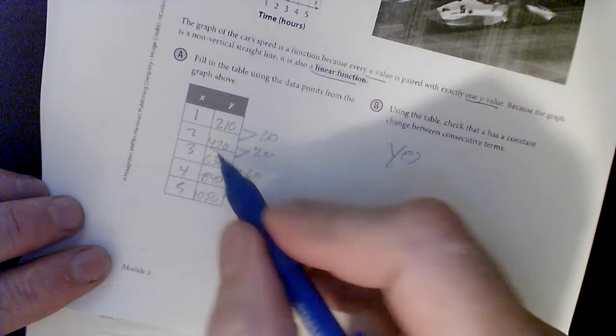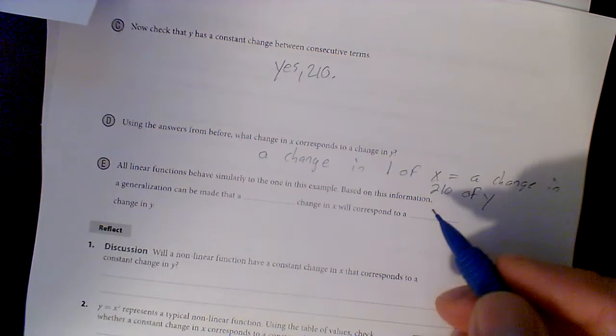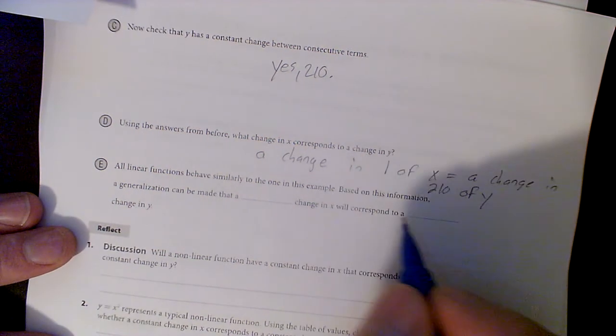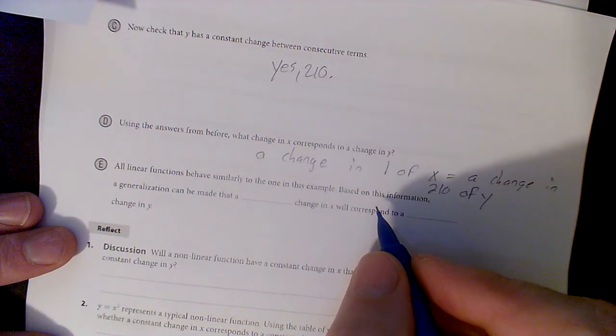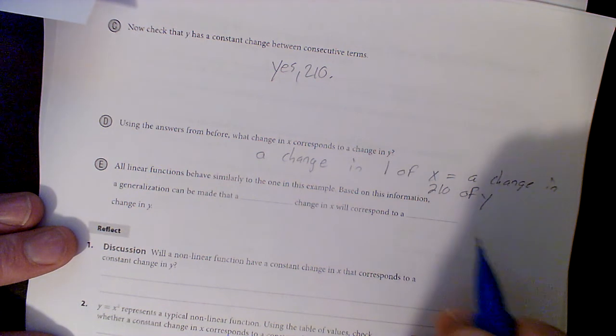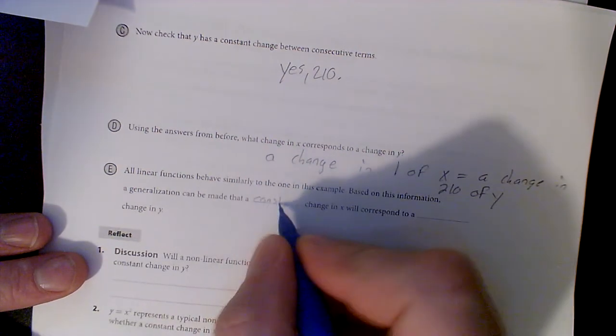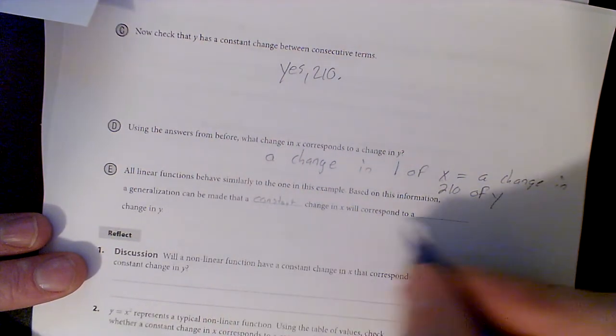All linear functions behave similarly to the one in this example. Based on the information, a generalization that can be made: a constant change in X will correspond to a constant change in Y.